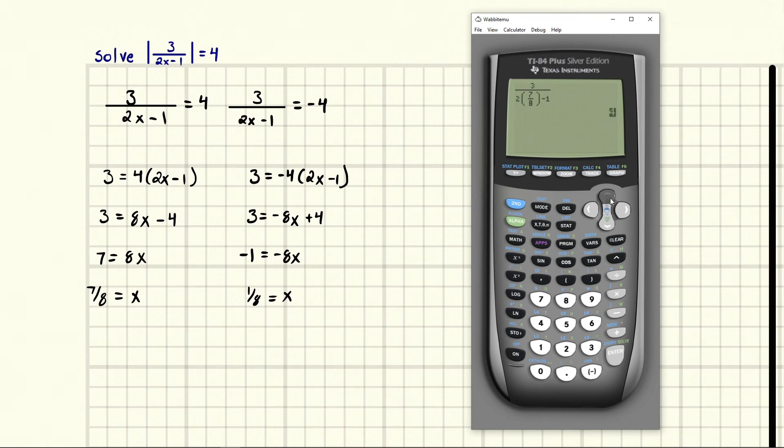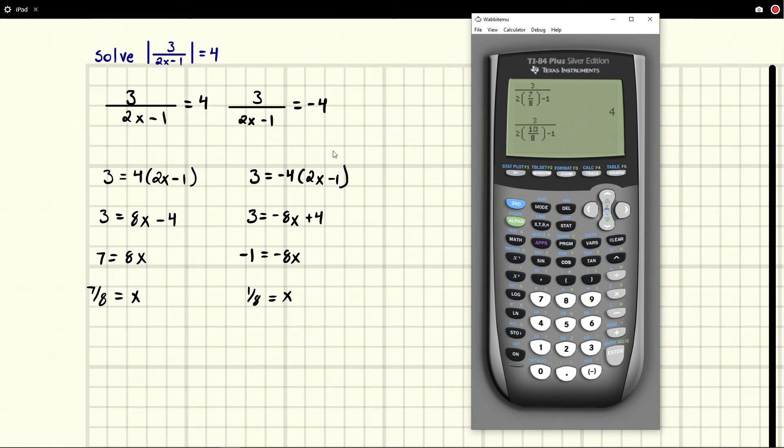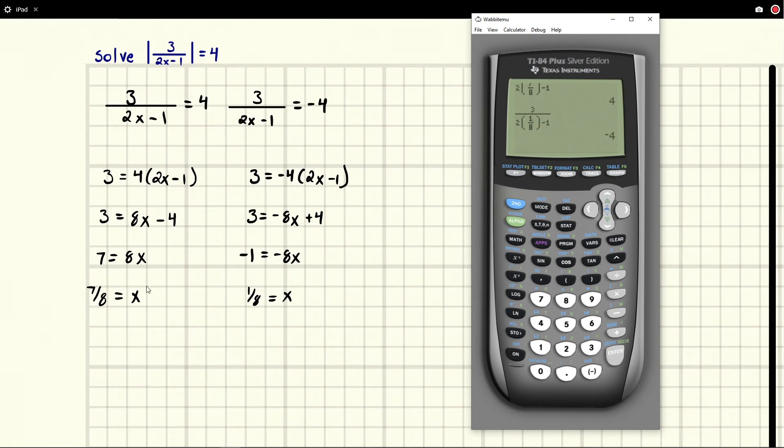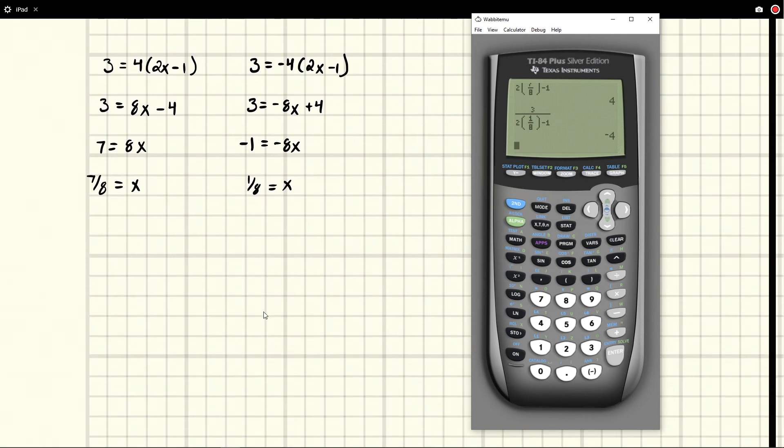And the next one we just simply change out that 7 eighths for 1 eighth. So we just put a 1 there and we expect to get negative 4 in this case. And we do. So we see that both of these check out and so we can write our solution set.